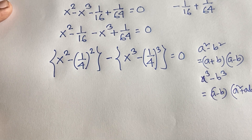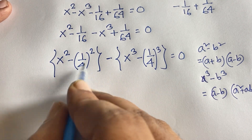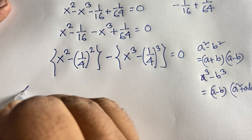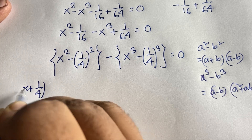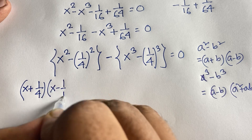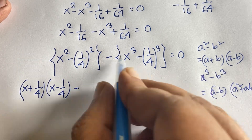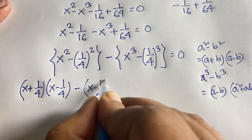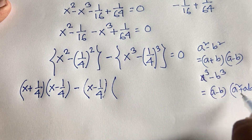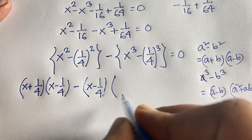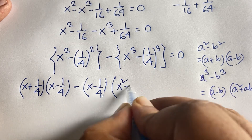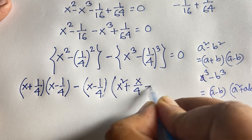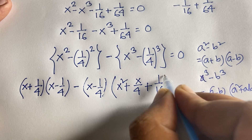For x squared minus (1 over 4) squared, applying a squared minus b squared gives (x plus 1 over 4)(x minus 1 over 4). For x cubed minus (1 over 4) cubed, applying a cubed minus b cubed gives (x minus 1 over 4) times (x squared plus x times 1 over 4 plus (1 over 4) squared), which is x squared plus x over 4 plus 1 over 16. This equals 0.